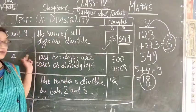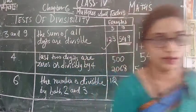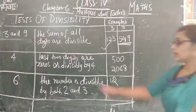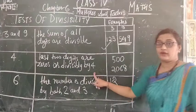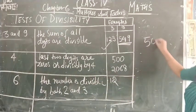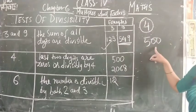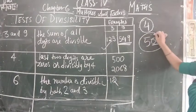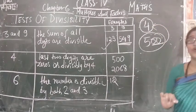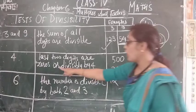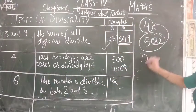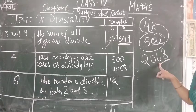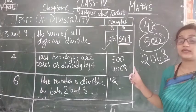Next is the test of 4. First you have to remember the condition: the last 2 digits are 0s, or the last 2 digits are divisible by 4. So we can say that the number is divisible by 4. Example: 2068 — you have to observe the last 2 digits. The last 2 digits are 68, and 68 is divisible by 4.